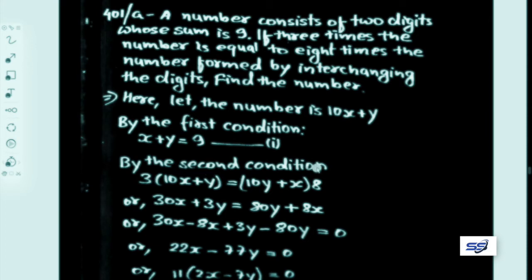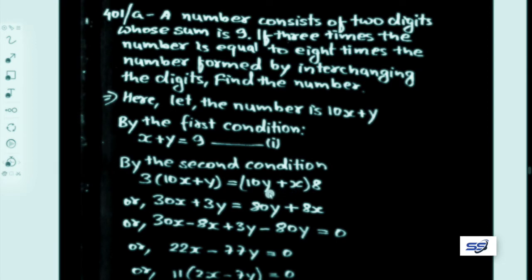From the second condition, 3 times the number means 3 into (10x plus y) equals 8 times the interchanged number, which is 10y plus x. So 3(10x + y) = 8(10y + x).